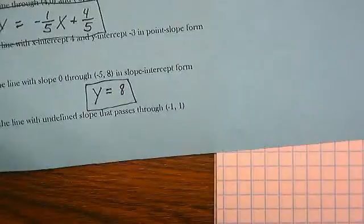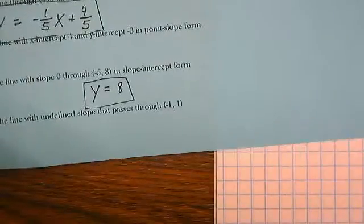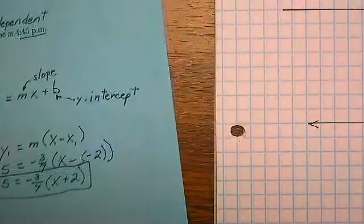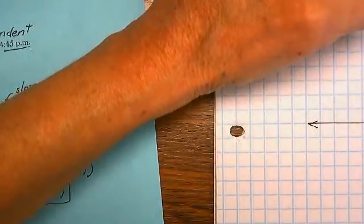And number 6. The line with undefined slope that passes through negative 1, 1. Negative 1, 1.